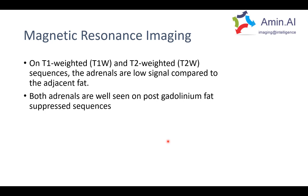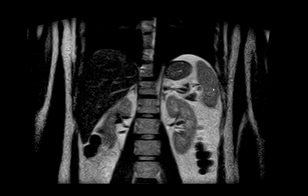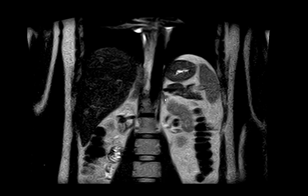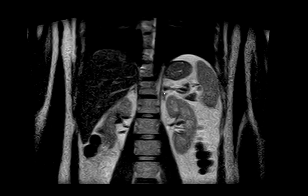On MRI, using T1 and T2 sequences, the adrenal glands are relatively low signal compared to the adjacent fat. Both adrenals are well seen on post-contrast fat-suppressed images. On MRI you can appreciate that the left adrenal gland, seen in close relation to the superior pole of the left kidney, is a relatively hypointense structure compared to the perirenal fat.